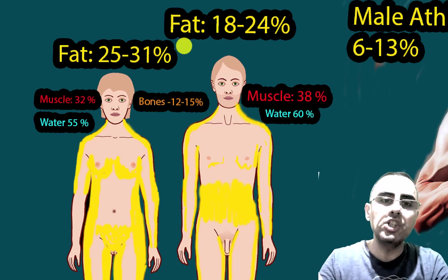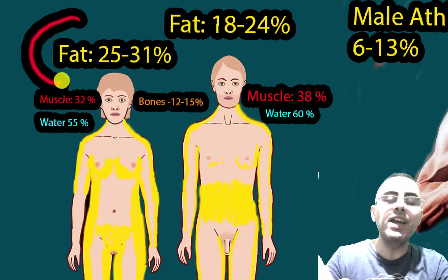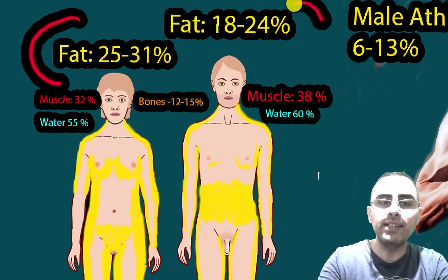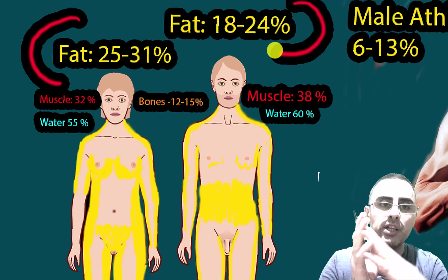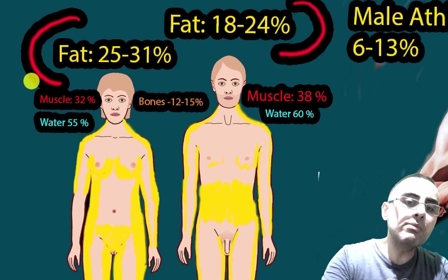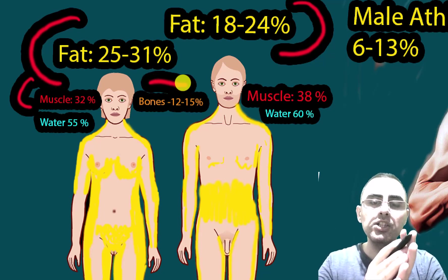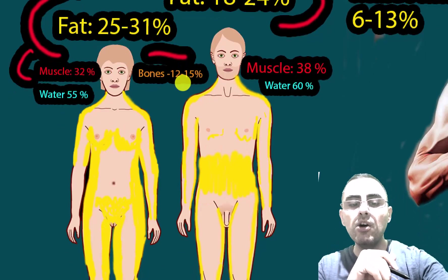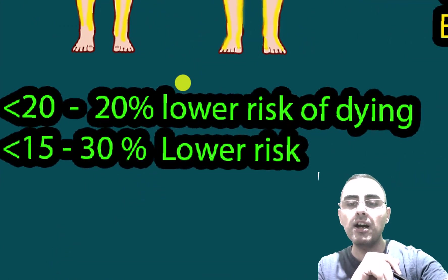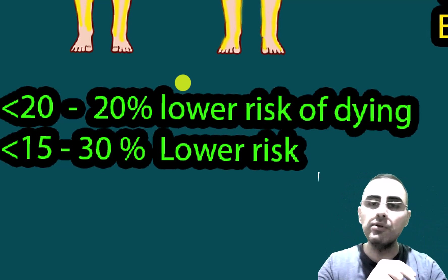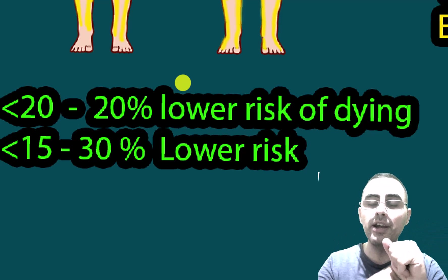When we talk about body composition, we usually mean fat proportion — the fat percentage of our body. We have fat tissues and non-fat tissues; non-fat tissues include muscles and bones. We pay so much attention to fat percentage because it's directly correlated with important diseases such as cardiovascular disease, type 2 diabetes, colorectal cancer, pancreatic cancer, breast cancer, and other types of cancers.